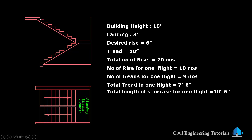Building height 10 feet — we can see in the elevation here, from plane level to top of the roof slab is 10 feet. Landing is 3 feet. Rise is 6 inch and tread is 10 inch. Total number of rises is 20 numbers. You can count from here — 1, 2, 3, 4, 5, 6, 7, 8, 9, 10 on this side, and 1, 2, 3, 4, 5, 6, 7, 8, 9, 10 on the other side.